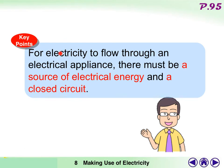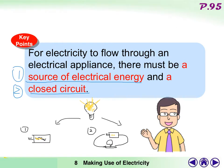Here is the summary. For electricity to flow through an electrical appliance, there must be a source of electrical energy and a closed circuit. Try to make some drawings on your notes to help you remember the key points in a summary more easily.